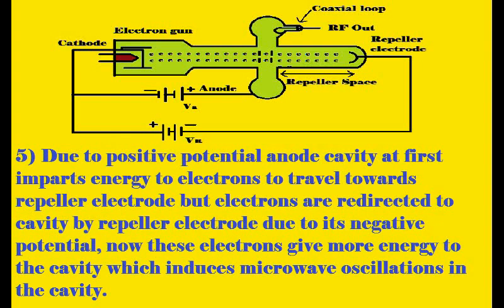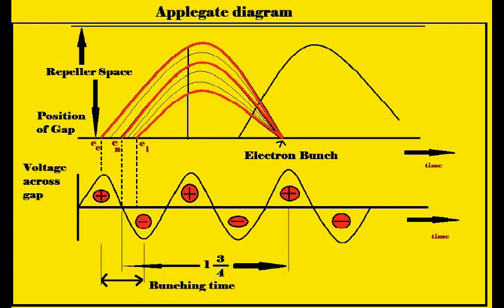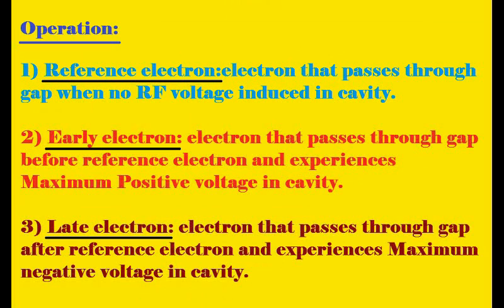This is how microwave oscillations are generated in the reflex klystron oscillator. The operation can be understood by investigating the applicate diagram. In the applicate diagram we investigate different cases of electron behavior for different gap voltages. Three electrons are specified: early electron (E), reference electron (Er), and late electron (El). The reference electron is taken as a baseline, and we compare electrons arriving before and after it.